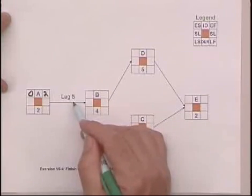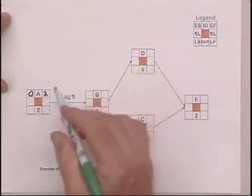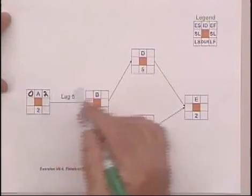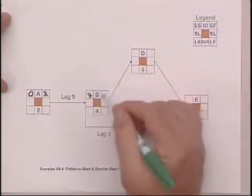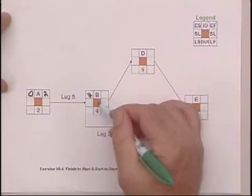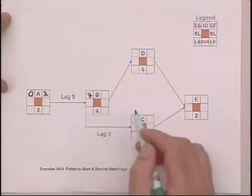Now, B can't start until five days after the completion of A. So now we add that five to the two, and the earliest B can start, then, is the seventh day. Again, when we go forward, we're always adding and choosing the larger number.